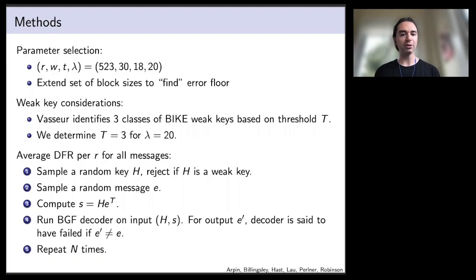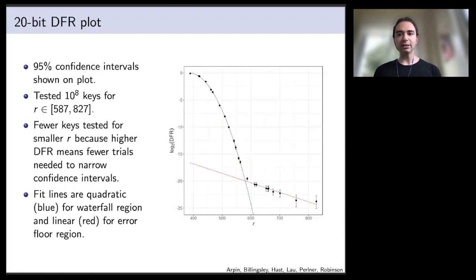Our process for analyzing DFRs is: we sample a random key and reject and repeat if we happen to get a weak key. We sample a random message, a random error vector as input E, compute its syndrome, and run the Black-Gray-Flip decoder. Then we look at the output and see, is this the same as the original input that produced the syndrome? If they're not equal, then we found a decoding failure and we record that. We repeat this process some number of times.